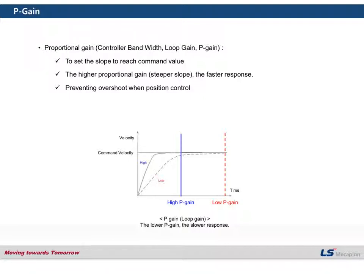In case of position control mode, we need to set the parameters for position, speed, and torque. However, if you use speed control mode, you don't have to set the parameters which belong to the position controller. Regarding torque control mode, some parameters related to torque are required to be set. I would like to introduce several gain variables and their functions, which are mainly used for manual tuning.